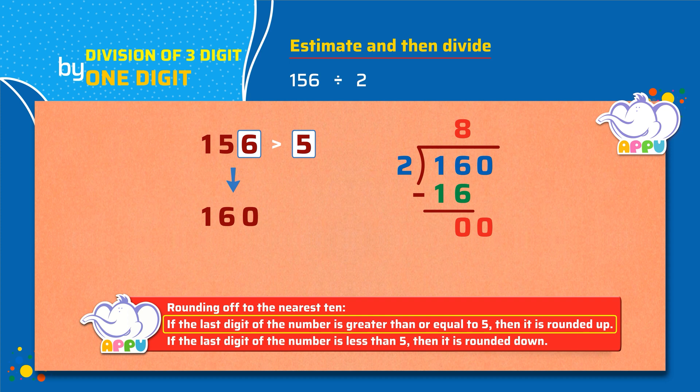So the number now is 0. We cannot divide 0, so we write 0 to the quotient. We stop division because 0 is less than 2. So the estimated quotient is 80.